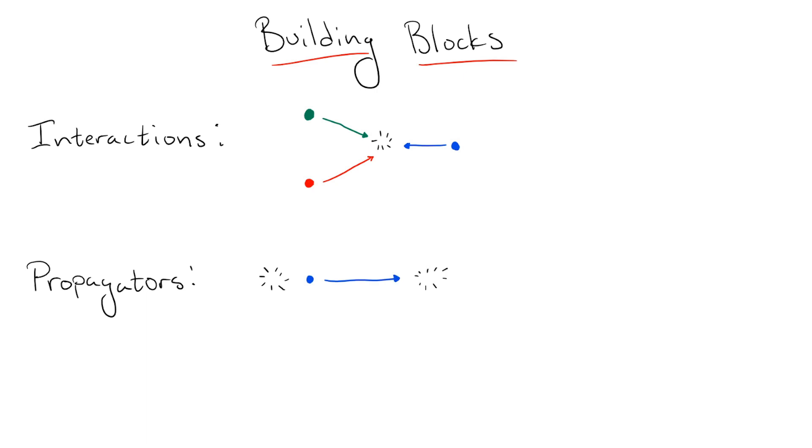Each of these building blocks can be represented graphically. The propagator is just a line, and the interaction is a vertex where multiple lines meet.